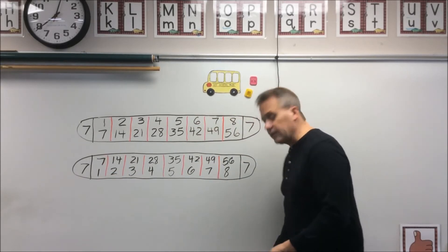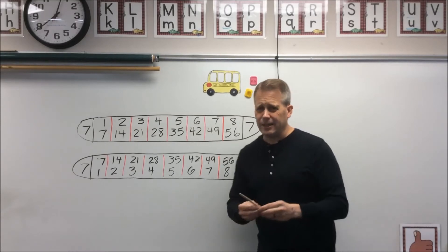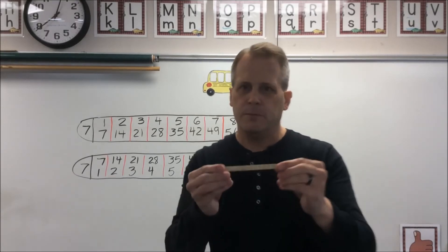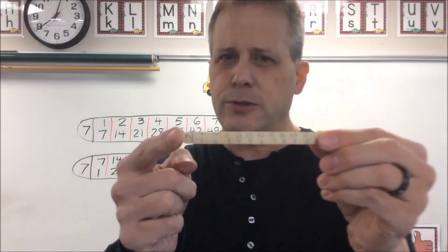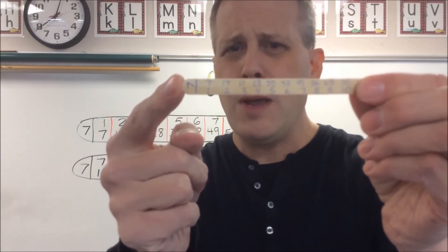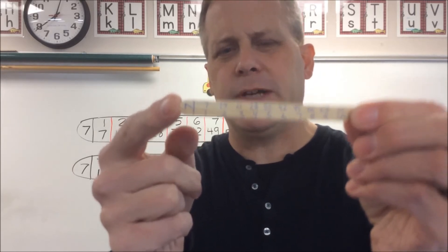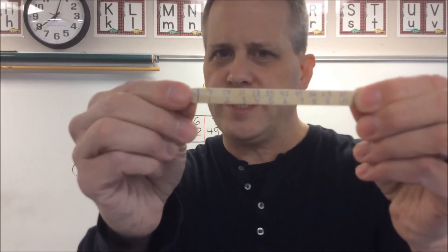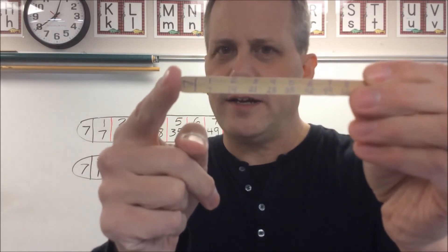Now I did do this on a little popsicle stick and it's going to be really hard to see, but I'm going to try to get up as close to the camera as possible so maybe you can see it. On one side I've got multiplication and on the back side I've got division.